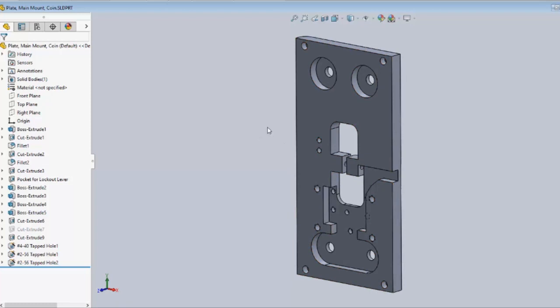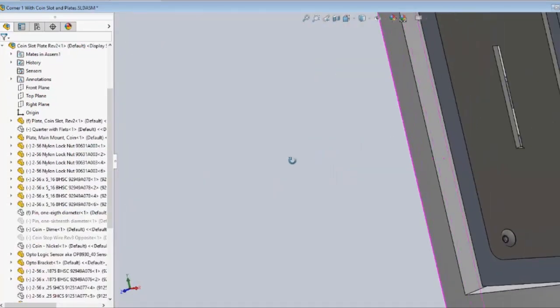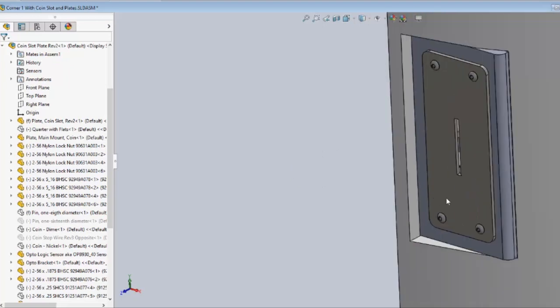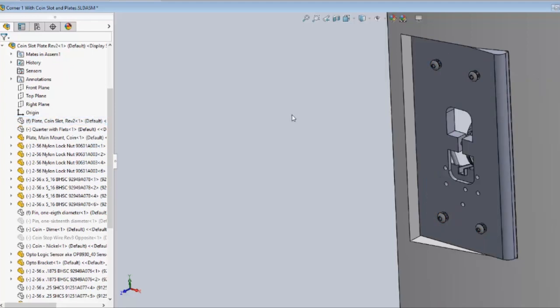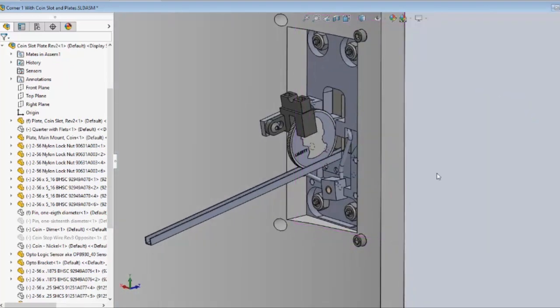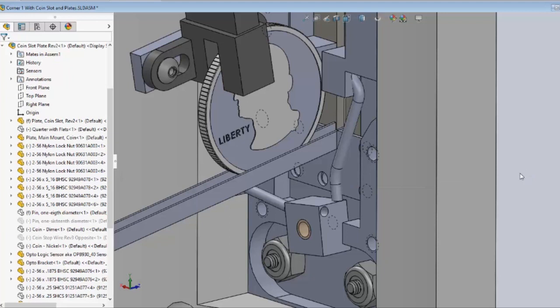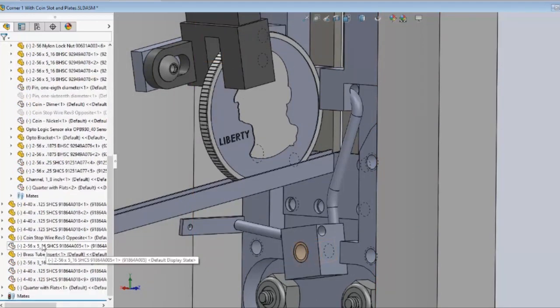So I've got to make a block that holds all the stuff and that block actually is what the coin slot itself, the stainless steel slot plate, is mounted to. And the block has some features. Now I've hidden the plate there and the block has features to which I can mount the ramp, the sensor, the blocking mechanism, and the whole thing is going to get screwed into that corner piece.